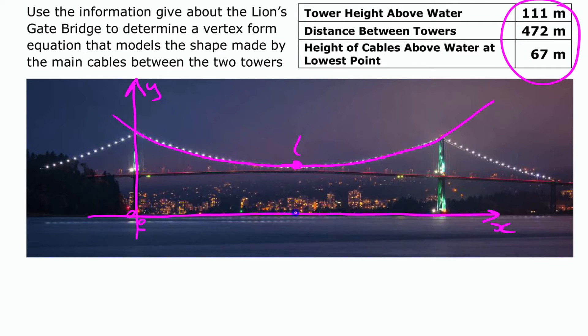So this is (236, 67) because that point is 67 meters off the water. My vertex is (236, 67). Other points that I know: the only other point I know here is the top of the towers. This point is (0, 111) because it hasn't gone left or right and it's 111 meters up there.